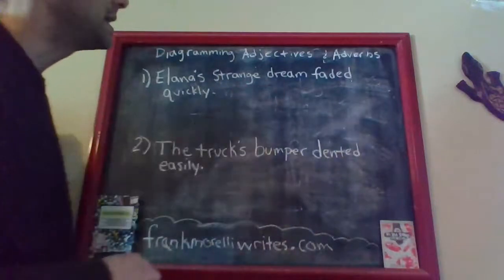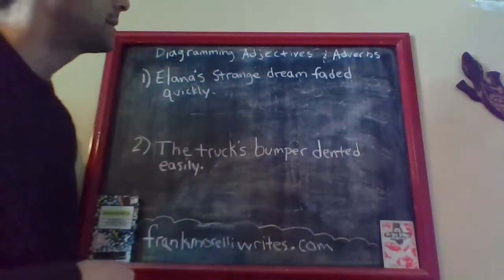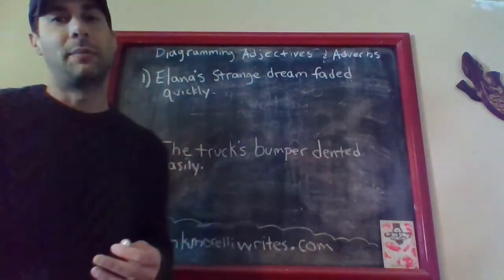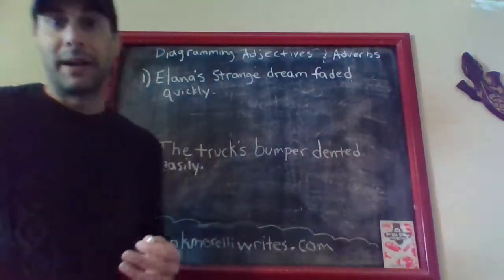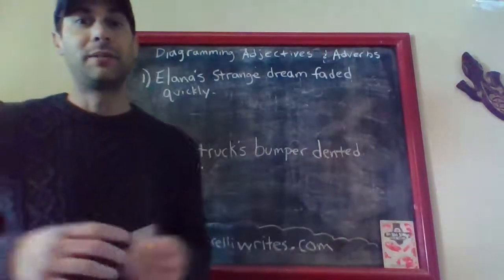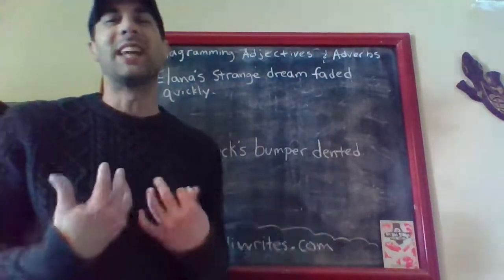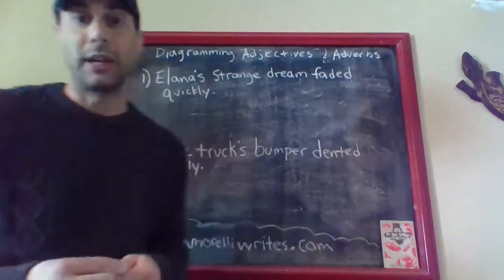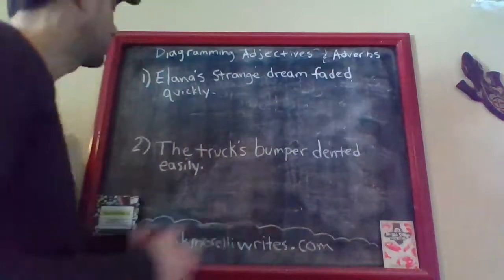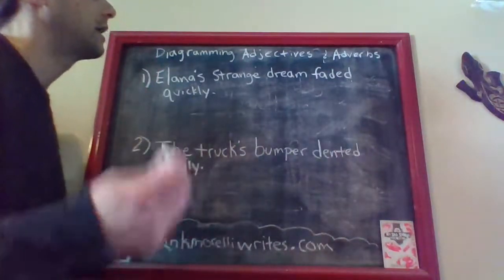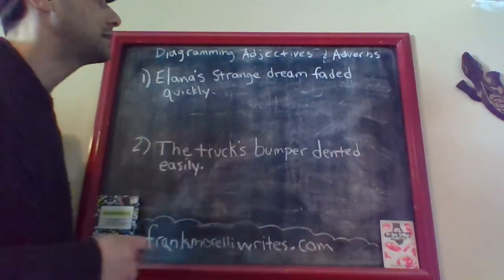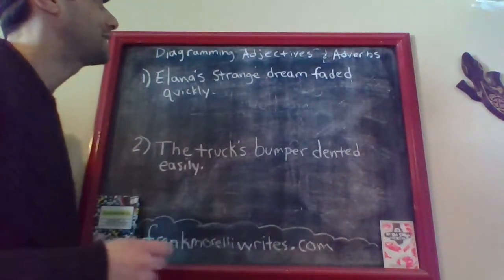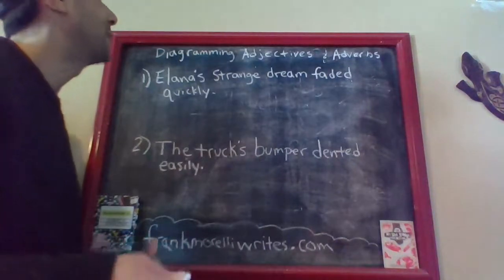An adverb does basically the same kind of thing, except that instead of giving us more information about a noun, it is giving us more information about a verb — about an action. So if I said 'I ran,' you might ask how did I run? Quickly. A word like 'quickly' would be an adverb — 'he ran quickly.' Usually in a lot of instances, adverbs are easily spotted because they end in '-ly.' But basically they are the adjective equivalent for the verb family.